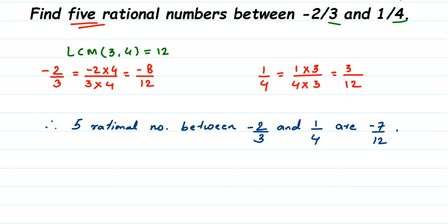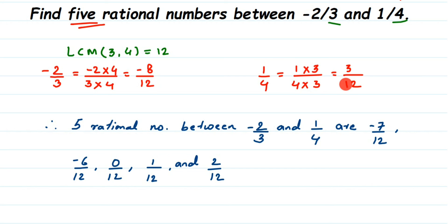The five rational numbers are: minus 7 by 12, minus 6 by 12, 0, 1 by 12, and 2 by 12. Do not include minus 8 by 12 or 3 by 12 themselves — those are the boundary numbers. You can pick any 5 from within. If you have any other questions or doubts, drop a comment and I'll try to make a video on it. Thank you for watching!